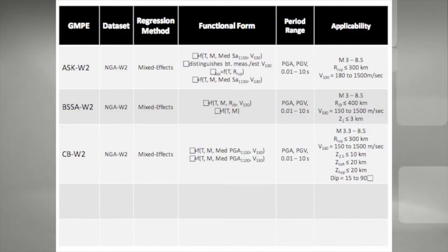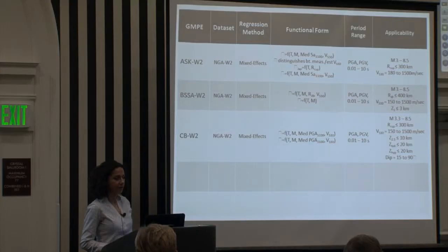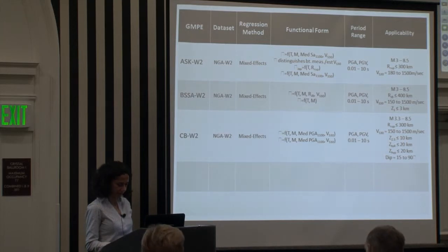Campbell and Bozorgnia used mixed effects algorithm. Both of their phi and tau are function of period, magnitude, and include the effects of soil non-linearity.